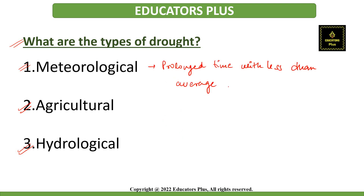Meteorological drought occurs when there is a prolonged period with less than average precipitation. Meteorological drought usually precedes the other kinds of droughts, which are agricultural drought and hydrological drought.